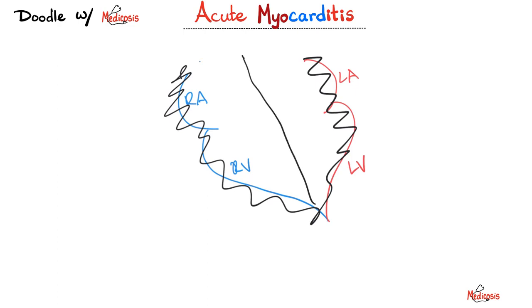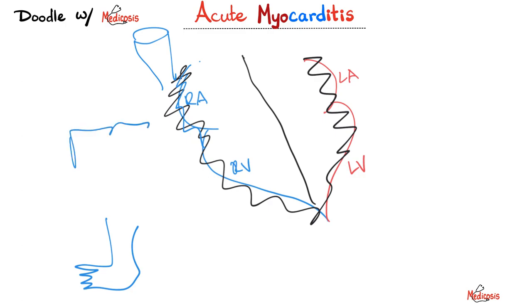If my right side is inflamed, it's going to be problematic to contract and pump blood. Blood is going to pool. From the right side perspective, I get something upstairs, something downstairs, and something in the middle. Upstairs: jugular venous distension. Downstairs: lower extremity edema. In the middle: hepatic congestion, also known as cardiac cirrhosis.